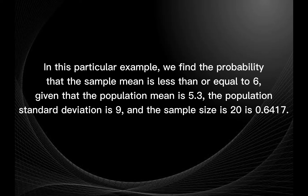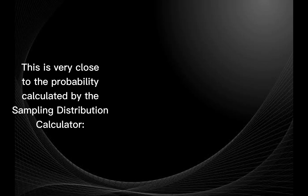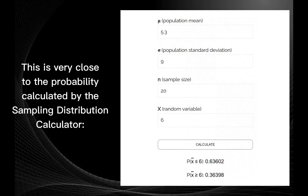In this particular example, we find the probability that the sample mean is less than or equal to 6, given that the population mean is 5.3, the population standard deviation is 9, and the sample size is 20. The result is 0.6417, which is very close to the probability calculated by the sampling distribution calculator.